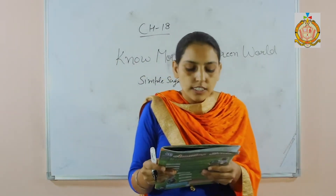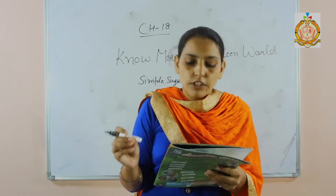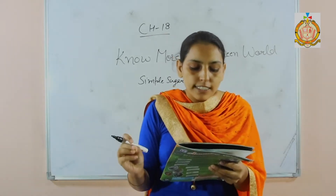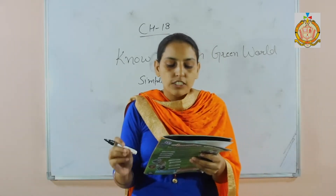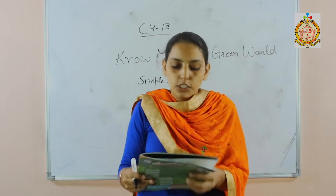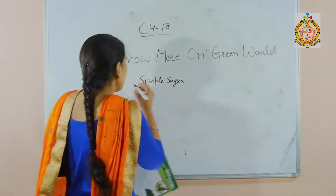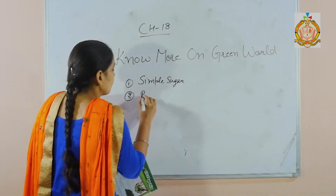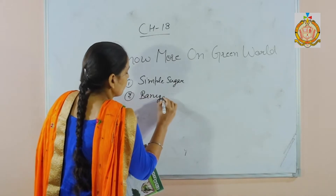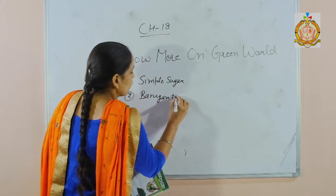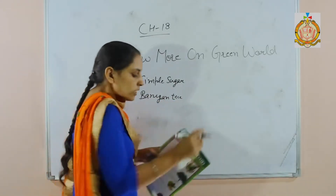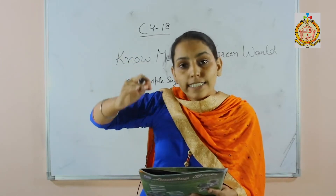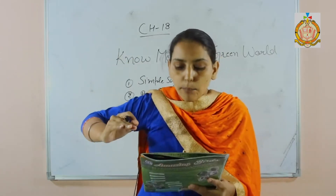Our second question is: which tree has roots that grow from the underside of the branches directly to the ground? That is the banyan tree. Banyan tree roots grow from the underside of the branches.